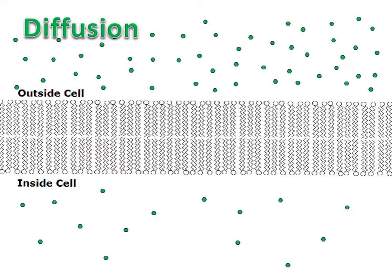In this first example we'll be looking at diffusion. We can see that there are a higher concentration of solutes on the outside of the cell and a lower concentration on the inside.